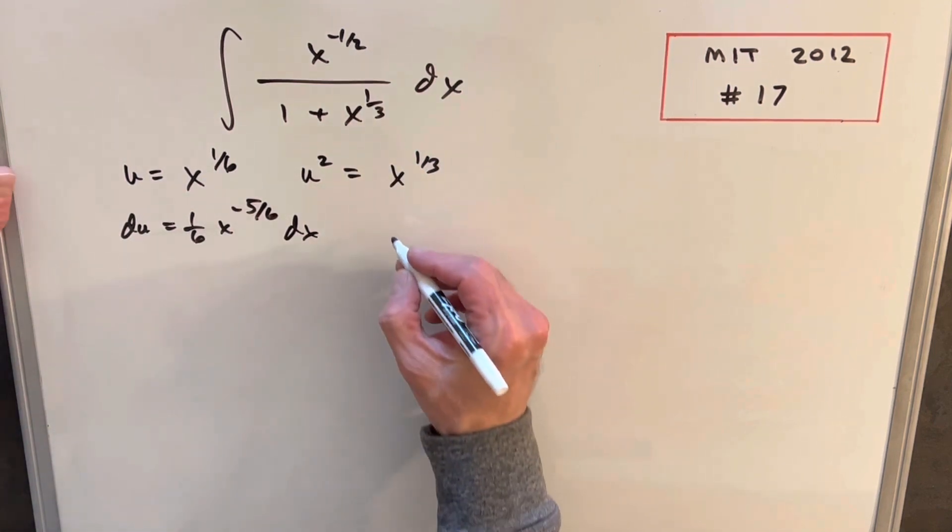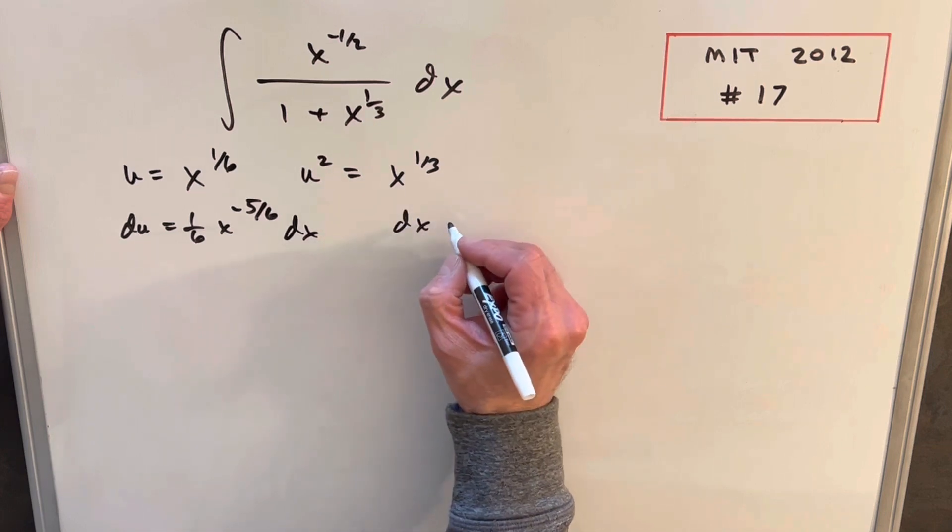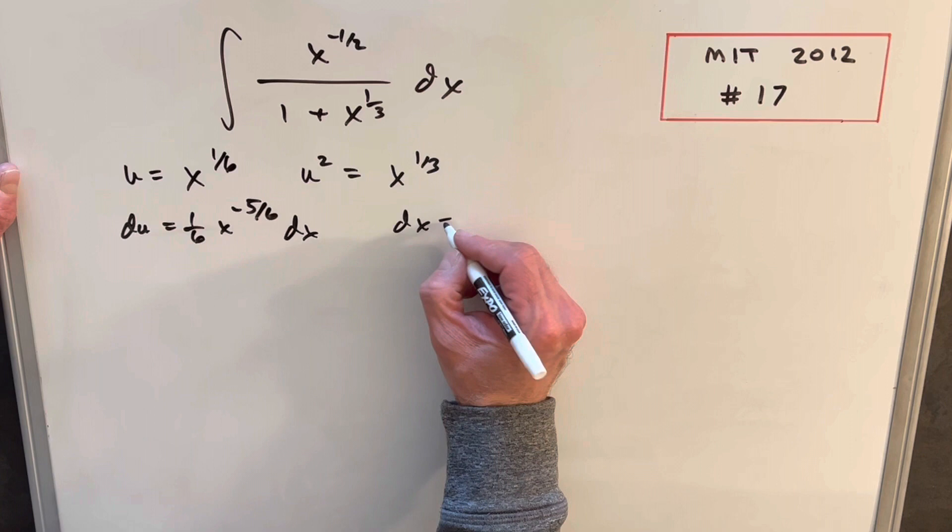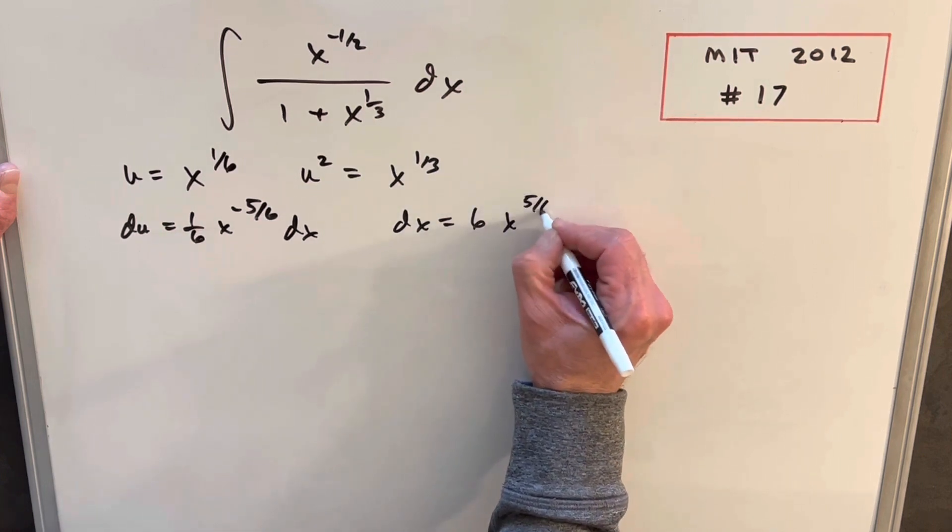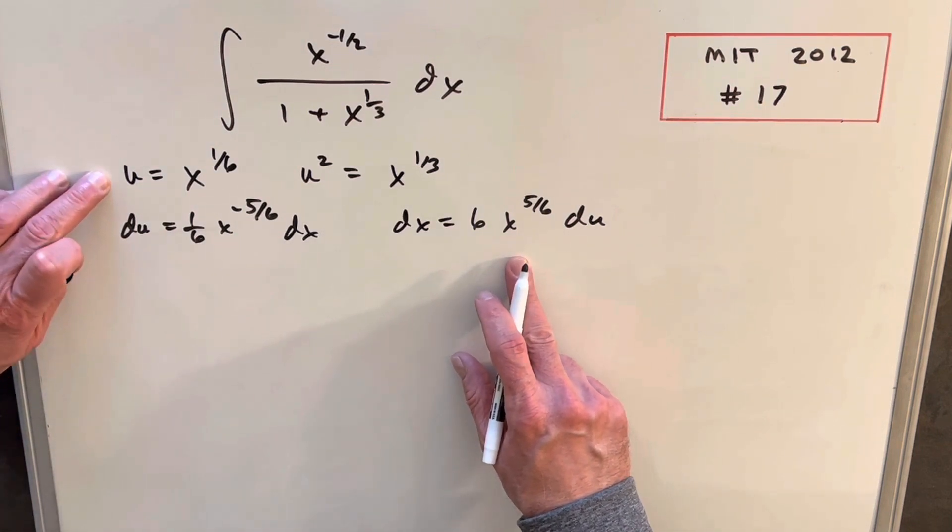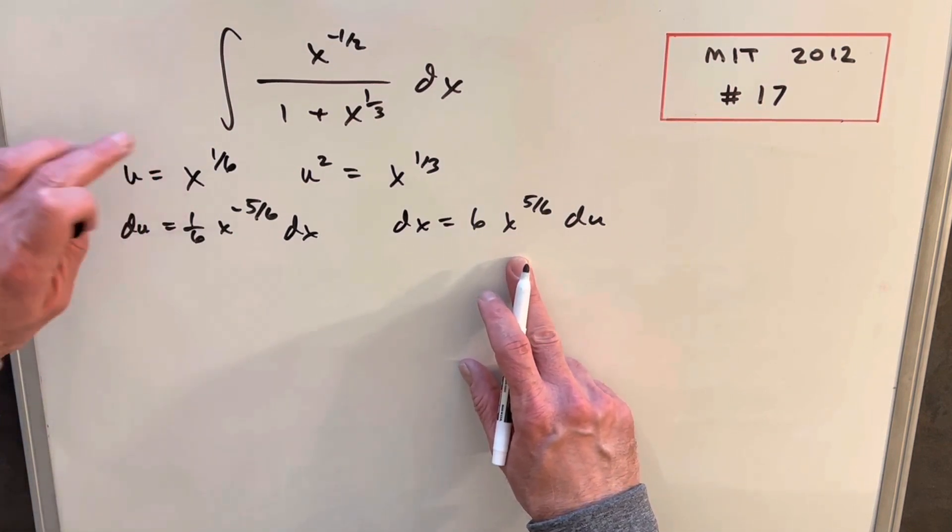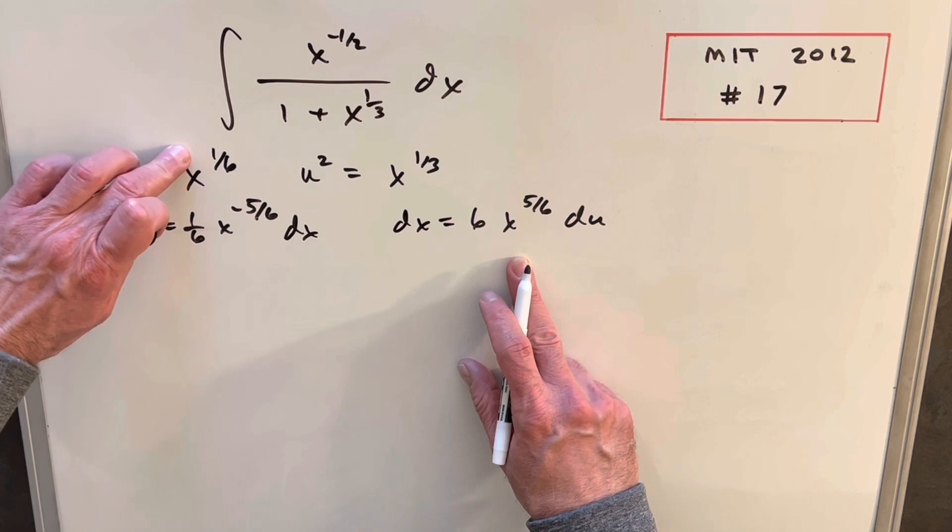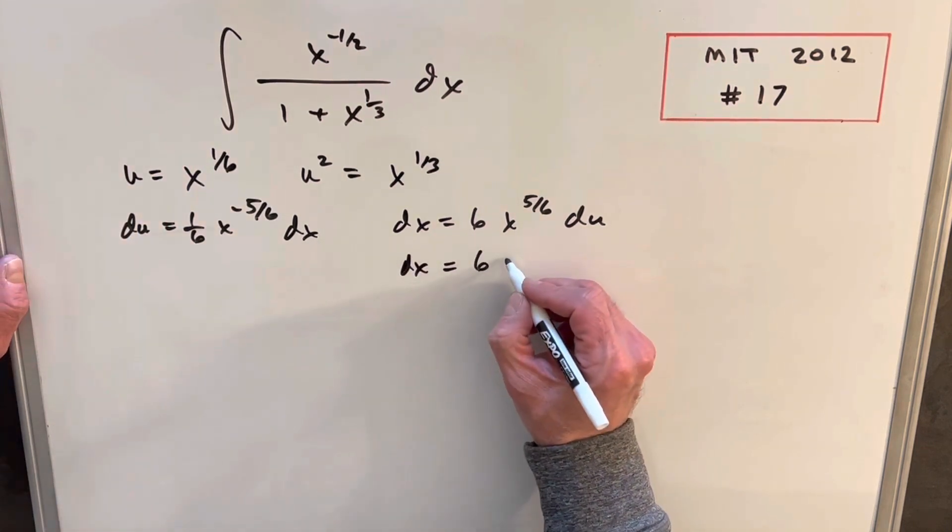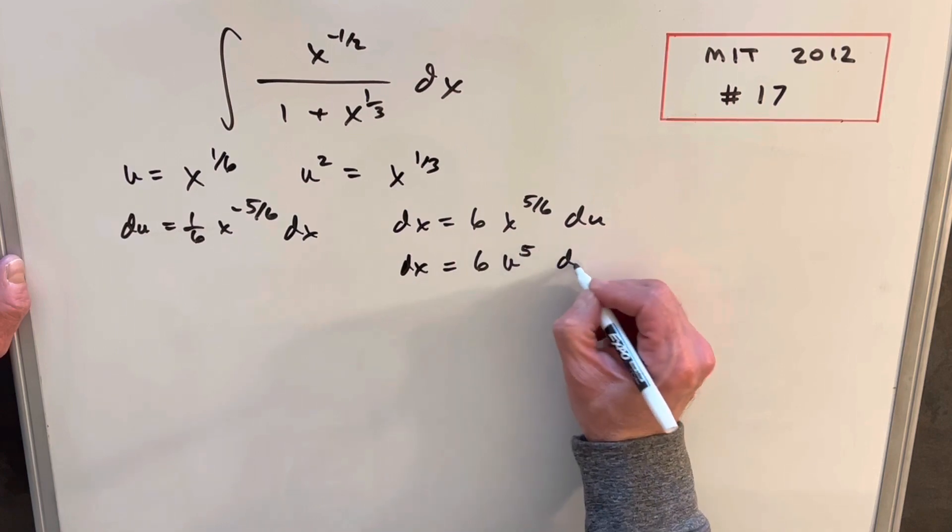Let's solve for dx and see where that takes us. So dx is going to be, we'll just take the reciprocal of everything. So we're going to have 6 times x to the 5 sixth. And then we want to write everything in terms of u. So u to the 5th would be, if we take u to the 5th, that would be x to the 5 sixth. So our dx value, we can write as 6 u to the 5th du.